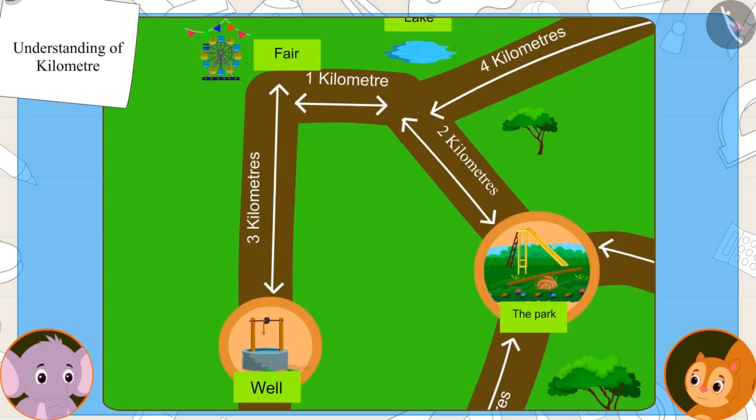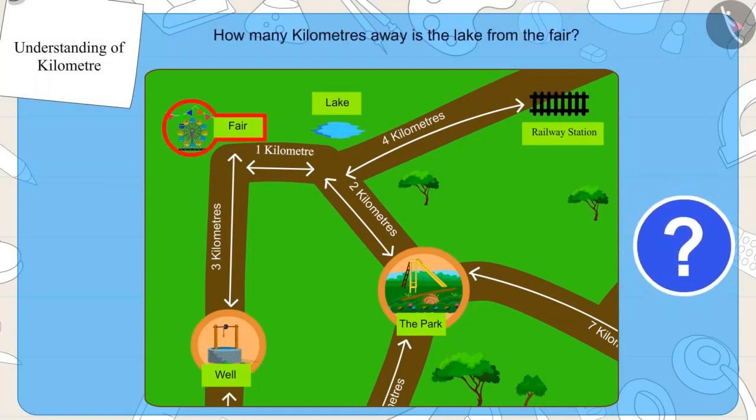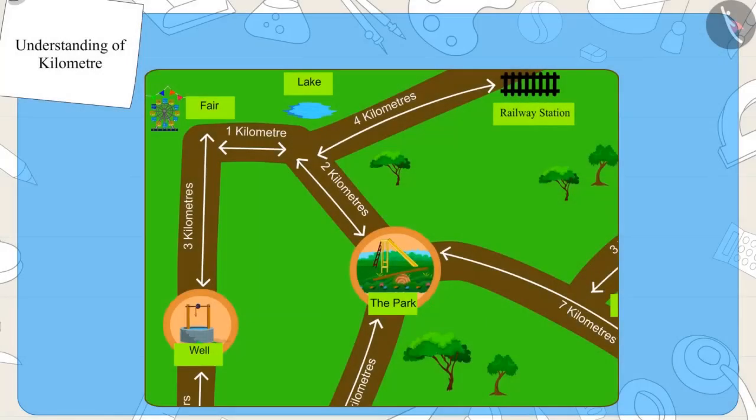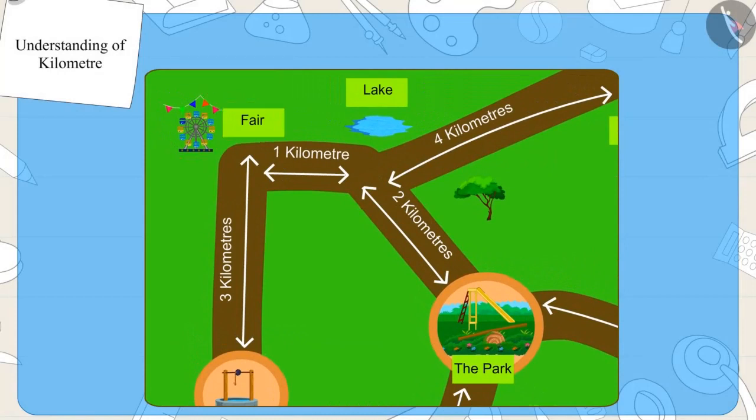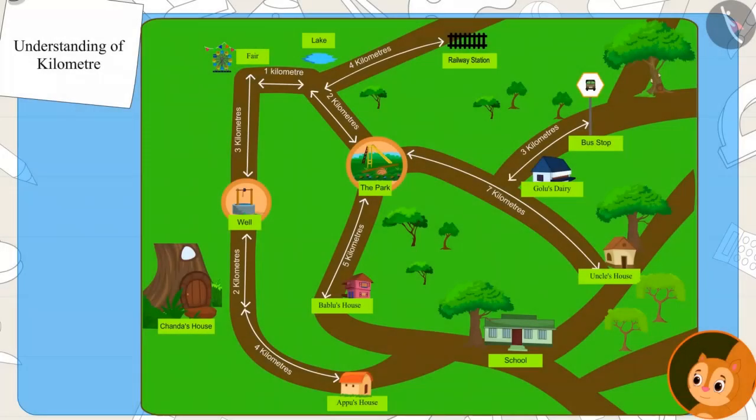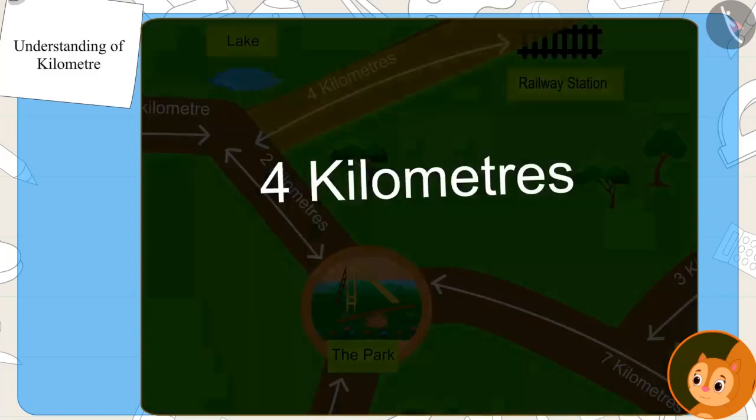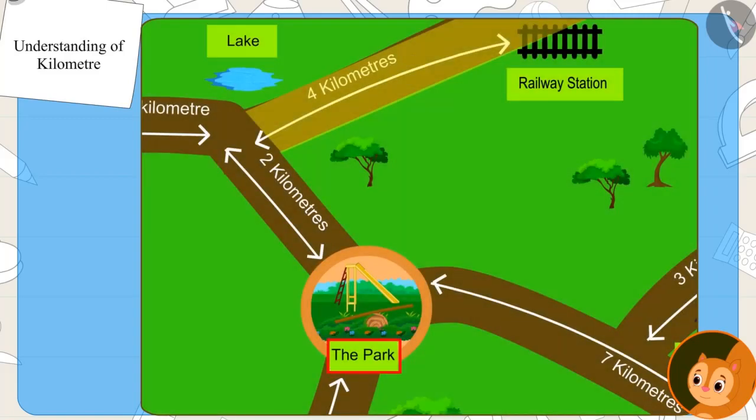Appu said to Chanda, Kids, can you see this map and tell how many kilometers away from the fair is the lake? Absolutely right. The distance from the fair to the lake is one kilometer. Now Chanda saw on the map that the distance from the lake to the railway station is four kilometers and that of the park from the lake is two kilometers.